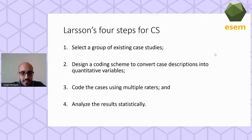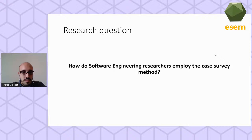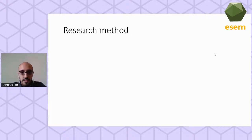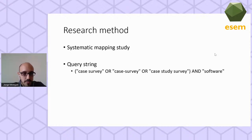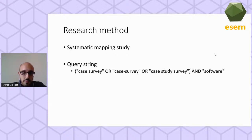Our research question was: how do software engineering researchers employ the case survey method? To answer this, we performed a systematic mapping study. We developed a broad query string using different terms for case studies, and searched IEEE, ACM Digital Library, Scopus, and Web of Science. We obtained 511 non-duplicated results, and after applying inclusion/exclusion criteria, we analyzed 12 studies.